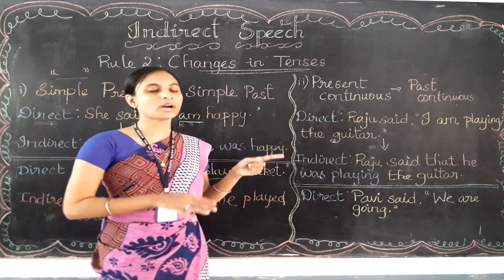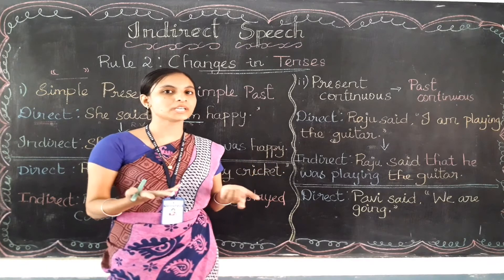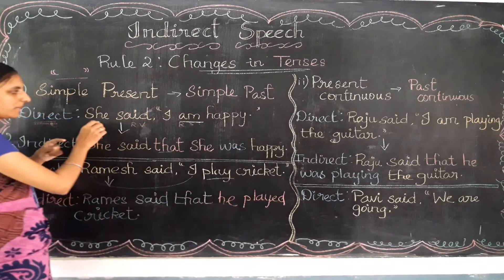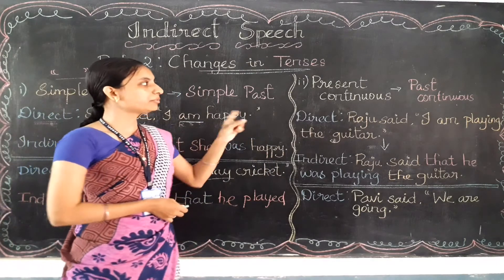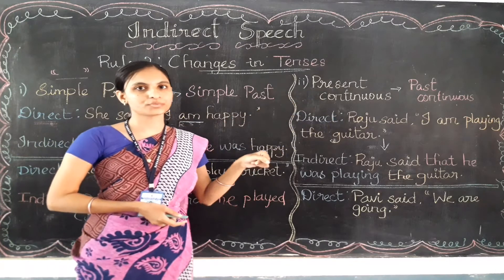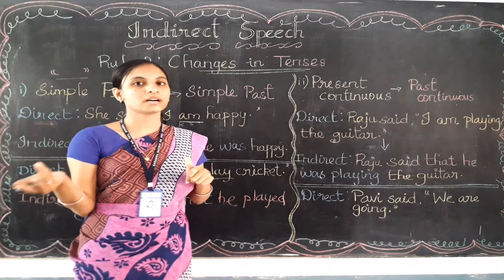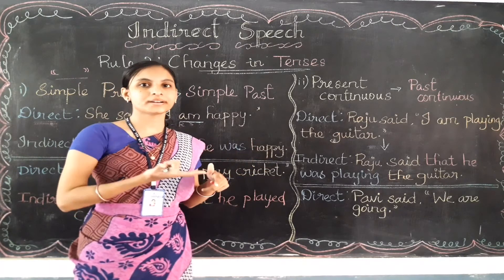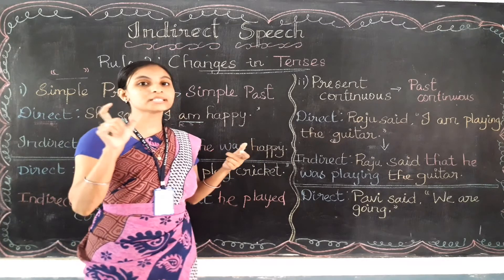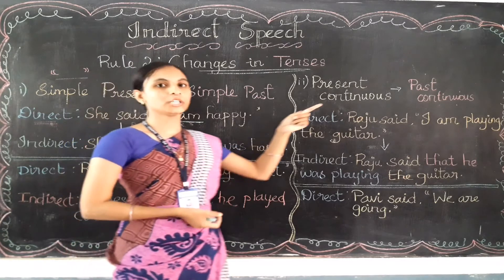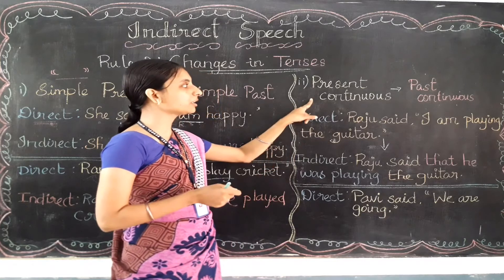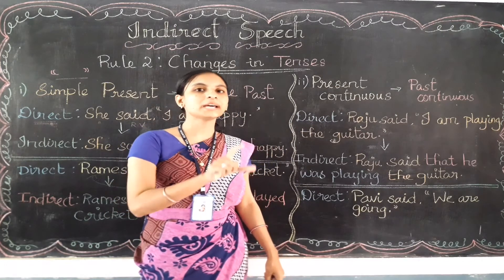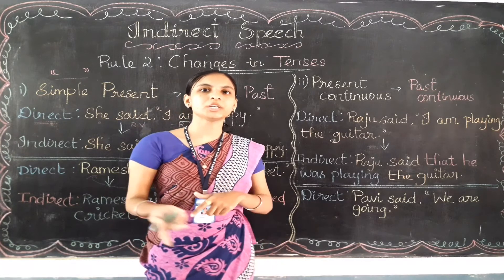Now let's learn about the second rule. Which tense is going to be changed into which type? If the reported speech — the speech inside the quotation marks — comes with a present continuous verb, that is 'is/are/am' plus verb plus '-ing,' that present continuous should be changed into past continuous. So 'is playing' becomes 'was playing,' 'are playing' becomes 'were playing,' and 'am playing' becomes 'was playing.'